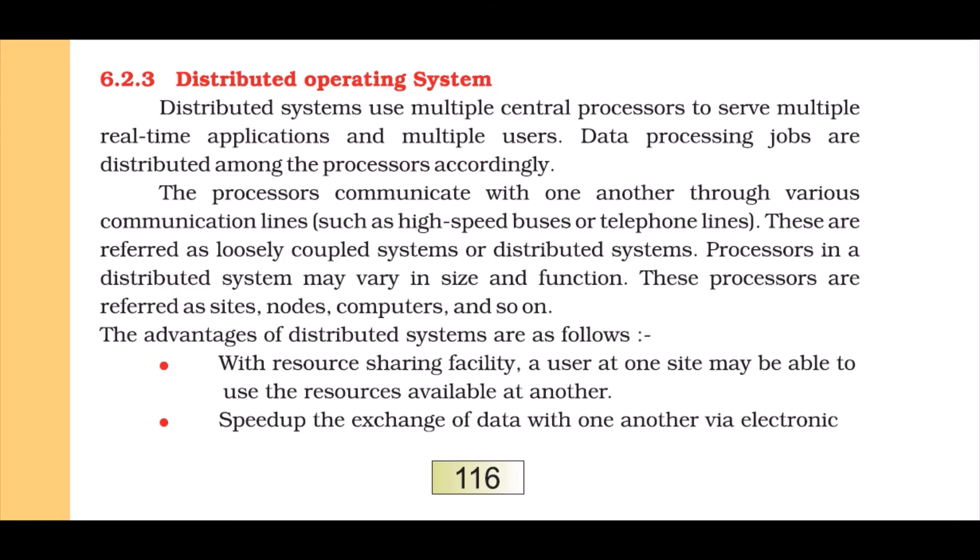The central processors are at multiple places and it serves real-time applications and multiple users at the same time. The processors communicate with one another through various communications lines such as high-speed buses or telephone lines — in other words, network lines.